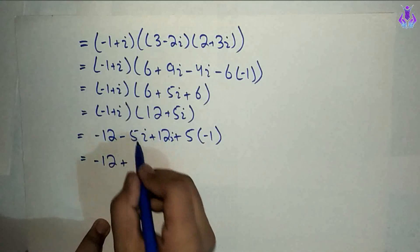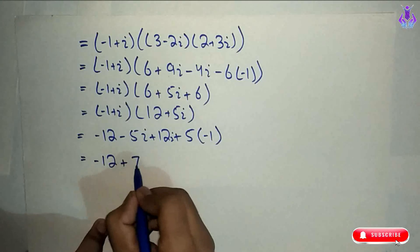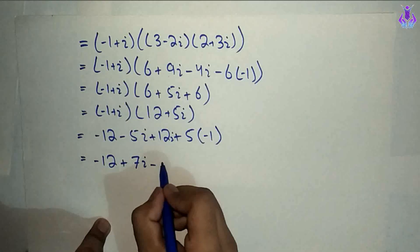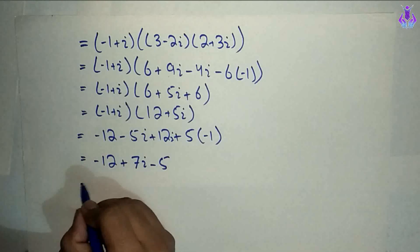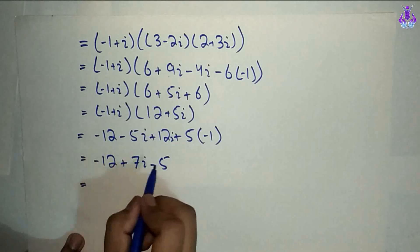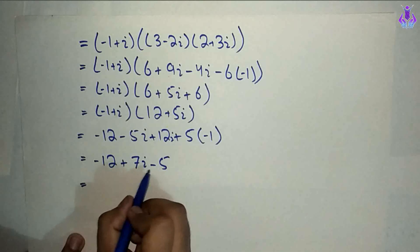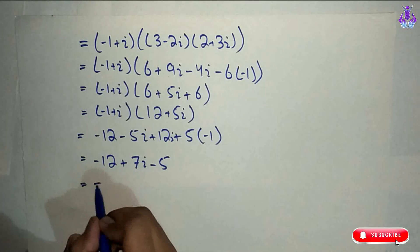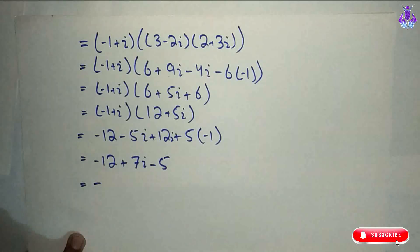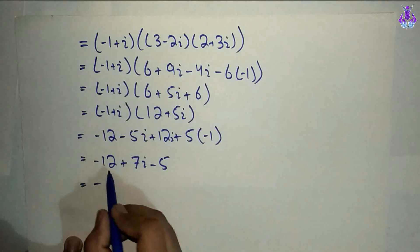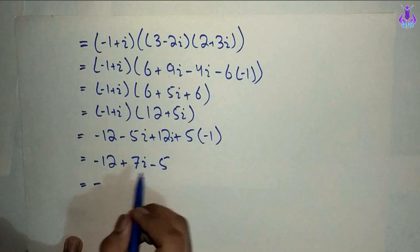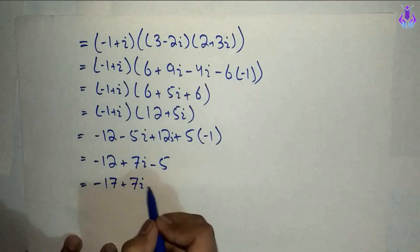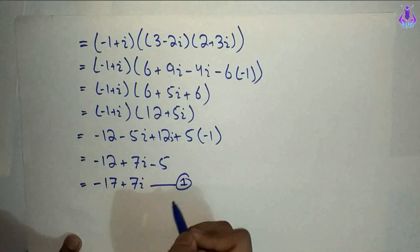Real part mein add karte hain: minus 12 minus 5 equals minus 17. Imaginary: plus 7 iota. So LHS equals minus 17 plus 7 iota. Yahan ayi hamare paas equation 1. Ab hum log right hand side lenge.